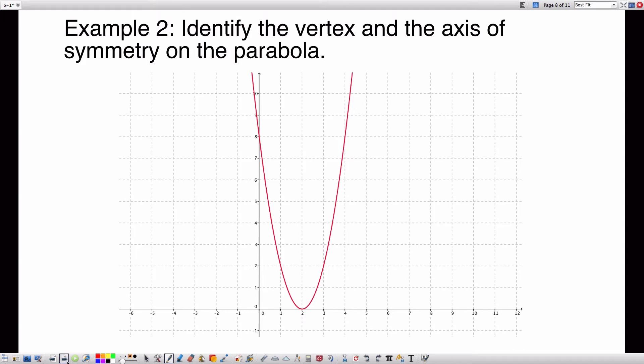Example 2 says to identify the vertex and the axis of symmetry on the parabola. The axis of symmetry is going to be right here. It's this line that splits that into mirror images. And the equation for that line, since it's a line, you have to write an equation: x equals 2. It goes through 2. x equals 2 is the line, the axis of symmetry. The vertex is where the axis of symmetry meets the graph, which is right here. And the vertex is a point. In this case, it's the point 2, 0. So the axis of symmetry is a line. The vertex is a point.